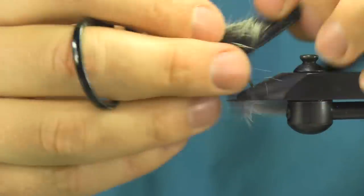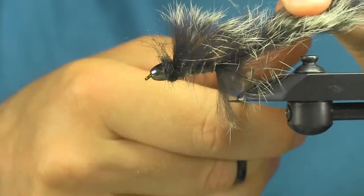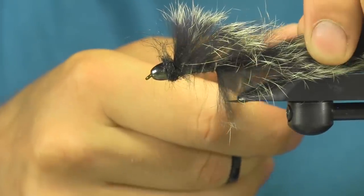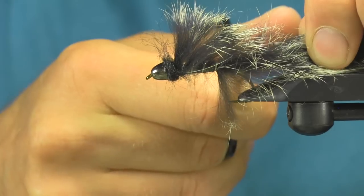And then for trimming the tail, what you want to do is get into that tail and take it right at the bend of the hook. You want to make sure that you're cutting just the hide, not the fibers, because the fibers will hang out longer than the hide.